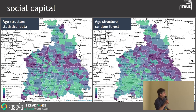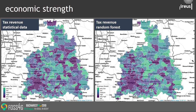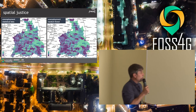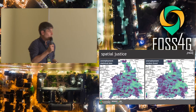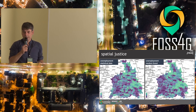Not as much of an issue here with the age structure, but still off by one class. And here with the tax revenue, the prediction is rather good. The last indicator we mapped is unemployment, which also matched very well as you can see.